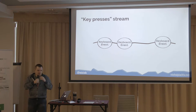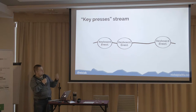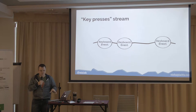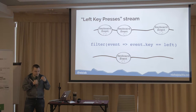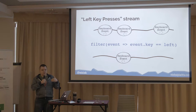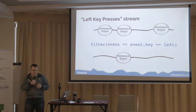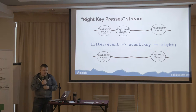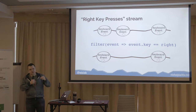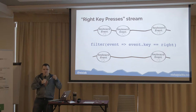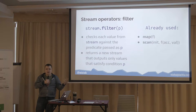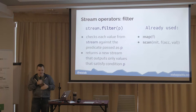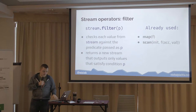Let's create a new stream — a key presses stream. This stream outputs a new object with the event inside every time the user presses a key on the keyboard. What we can do with that is filter — the third operator. We can filter values from this key presses stream and only output values which are left key presses. Similarly, we can do the same for right key presses. So we have two new streams: left key presses and right key presses. The filter operator takes a predicate p, and whenever this predicate is satisfied, the value from the input stream is passed to the output stream.